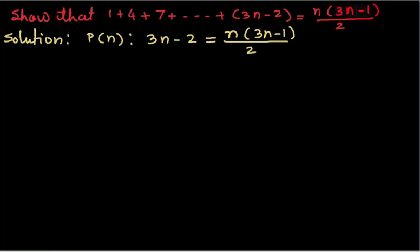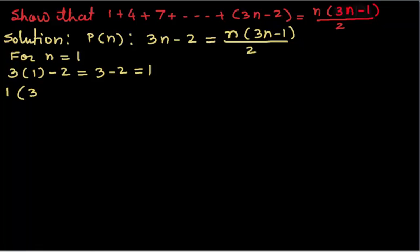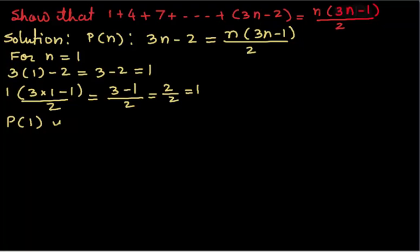First we will prove that P(1) is true. For n equals 1, the left side is 3 times 1 minus 2, which is 3 minus 2, which equals 1. The right side is 1 times (3 times 1 minus 1) over 2, which is (3 minus 1) over 2, equals 2 over 2, which equals 1. From this we got that left hand side equals right hand side. So P(1) is true.